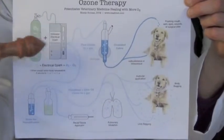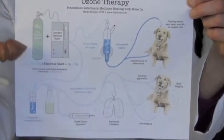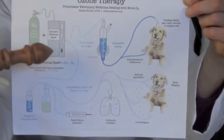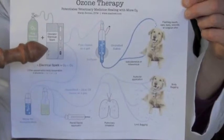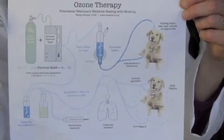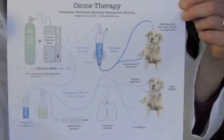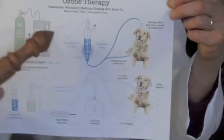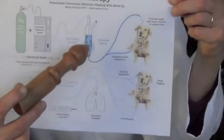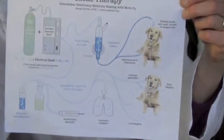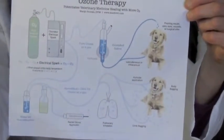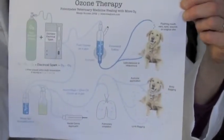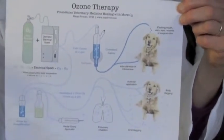This is the ozone generator here. We take the oxygen and it runs through the ozone generator where it's converted partially into O3, so it's an oxygen and O3 mixture. We then bubble that into saline for about half an hour to saturate the O3.